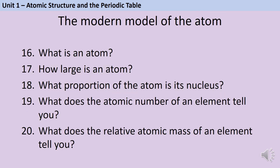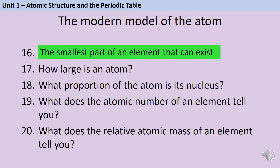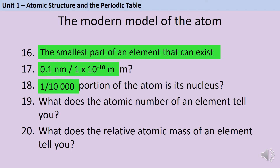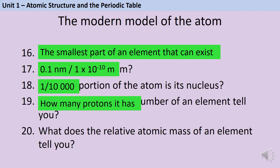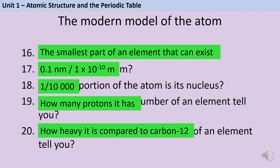An atom is the smallest part of an element that can exist, and it's approximately 0.1 nanometres across, which can also be expressed in standard form as 1 × 10⁻¹⁰ metres. Around one ten-thousandth of the whole atom is the nucleus, so the rest is empty space. The atomic number of an element tells you how many protons it has, while the relative atomic mass is how heavy it is compared to carbon-12. This is distinct from the mass number, which tells you how many protons and neutrons in total are in the nucleus.